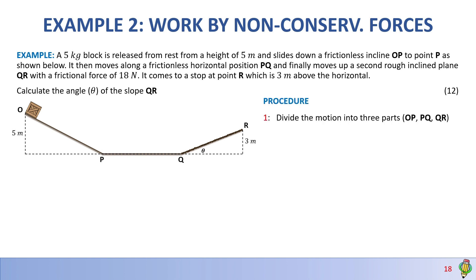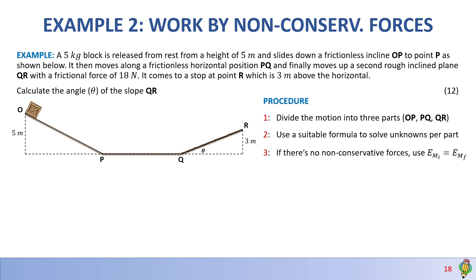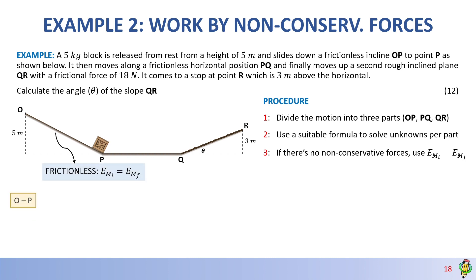Step 1: Divide the motion into 3 parts — OP, PQ, and QR. Step 2: Use a suitable formula to solve for unknowns. Step 3: If there are no non-conservative forces, use the principle of conservation of energy. Let's look at the motion of the block in the first part. We know that OP is frictionless, so we can use the conservation of energy.